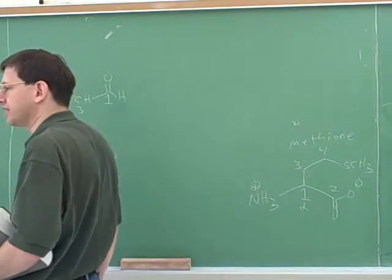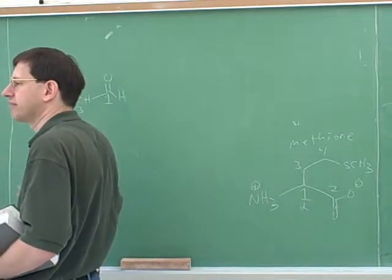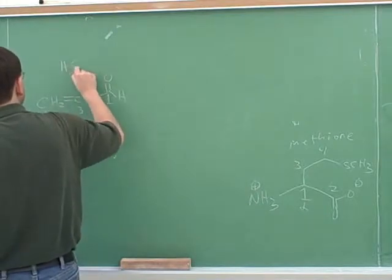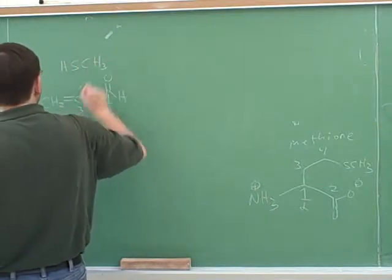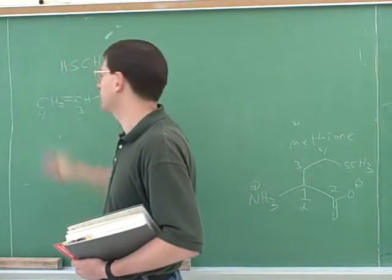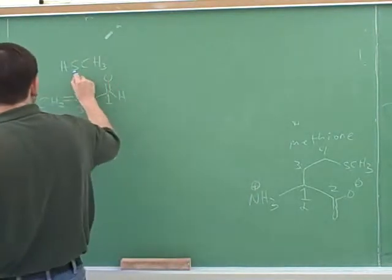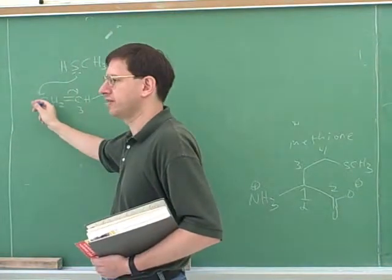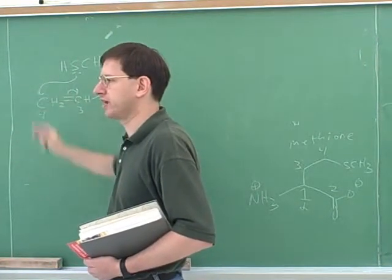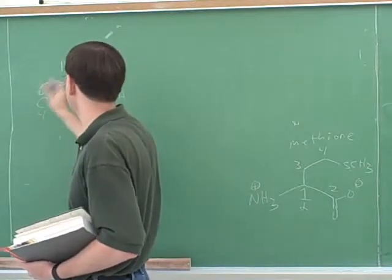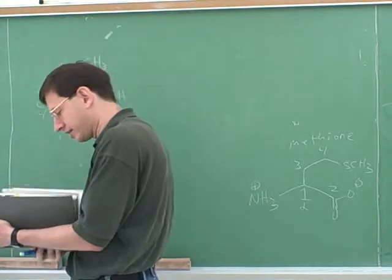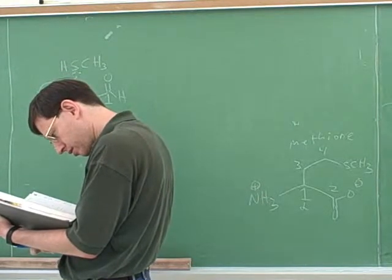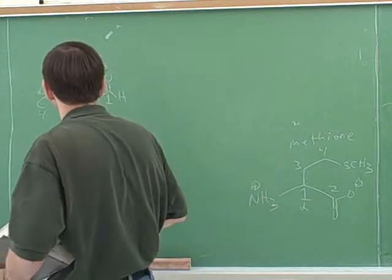Technically, Michael addition is only when you have an enolate nucleophile. But it's like a Michael addition. It would be called a conjugate addition, where we're attacking the beta carbon. Notice though, that the nucleophile would look like this. And as we already discussed, the beta carbon here is electrophilic because there's a resonant structure where it has a full positive charge. Sulfur is a pretty good nucleophile, even in a neutral form. So we can attach. We don't need any catalyst or anything for this.